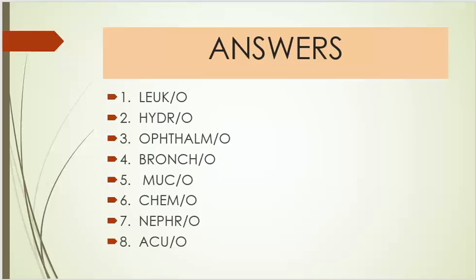Answers: Number one is leuco, number two is hydro, number three is ophthalmo, number four is broncho, number five is muco, number six is chemo, number seven is nephro, number eight is acuo.